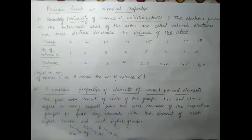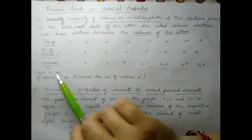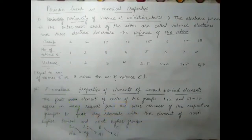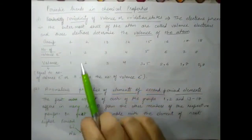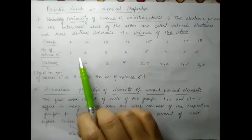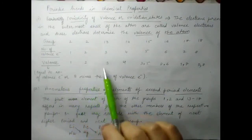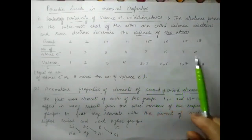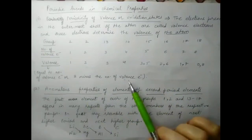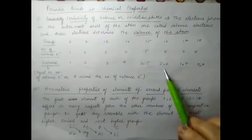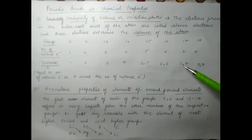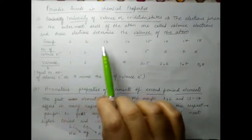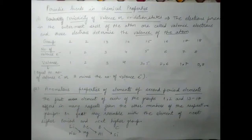Valence is calculated for groups 1, 2 (s-block) and groups 13 to 18. Valence equals either the number of valence electrons or 8 minus the number of valence electrons. For groups 1 to 14, the valence equals the number of valence electrons (1, 2, 3, 4). From groups 15 to 18, the valence can be 8 minus 5 = 3 or 5; 8 minus 6 = 2 or 6; 8 minus 7 = 1 or 7; and 8 minus 8 = 0 or 8.